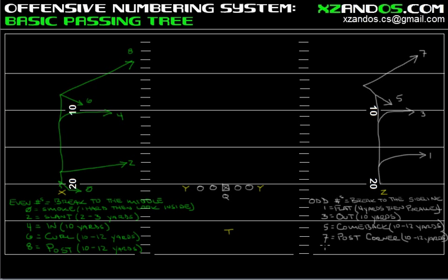The final odd number is a nine — the rule breaker, because it doesn't really go to the outside or towards the sideline. But it's a route everybody wants in their arsenal: the go route. You just keep pressing up the football field and try to knock the top off of the defensive secondary.